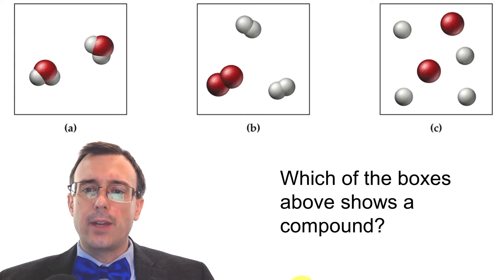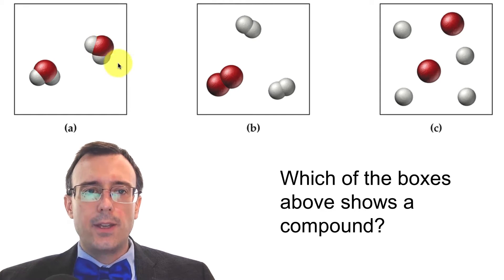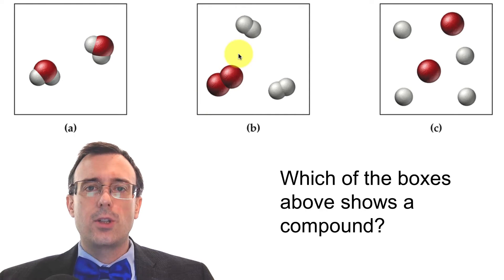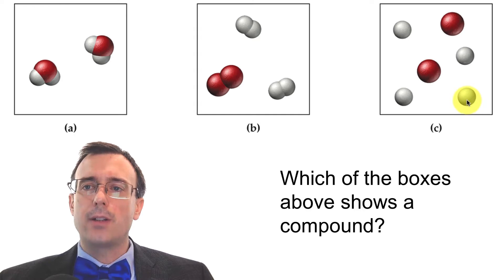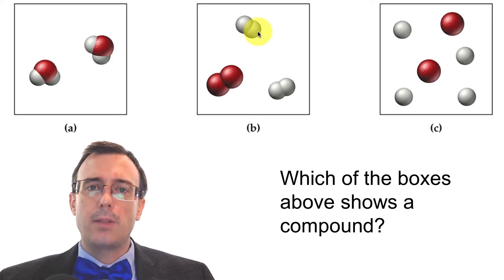Pause here for a minute and think: which of these boxes shows a compound? If you said A, you're correct — those different elements are overlapping, meaning they're bonding, and that's exactly what a compound is. In another box you have a mixture of two different elements. One box shows an element because they're both the same red spheres — the same type of atom. And here you have a mixture of two different elements together, but they're not bonded — there's no bonding between any of these atoms at all. Just because atoms are bonded doesn't make it a compound; in this case you have bonding within a single element, and you can tell it's not a compound because they are the same color, meaning the same type of atom.